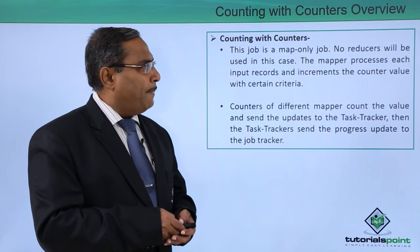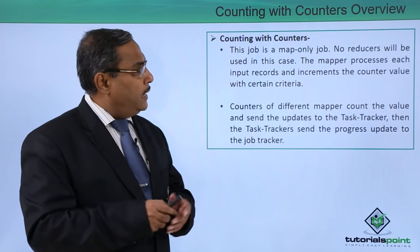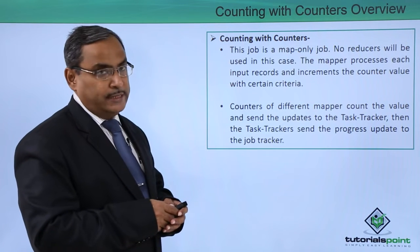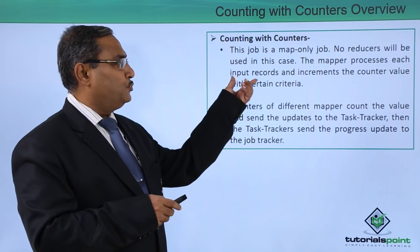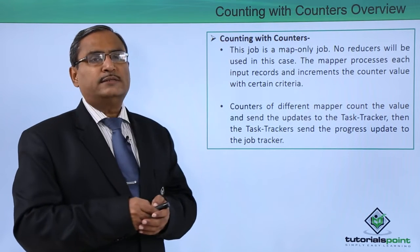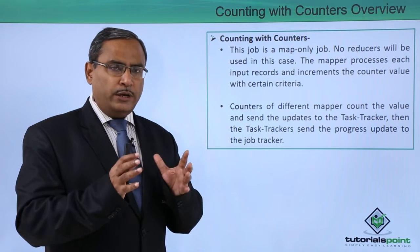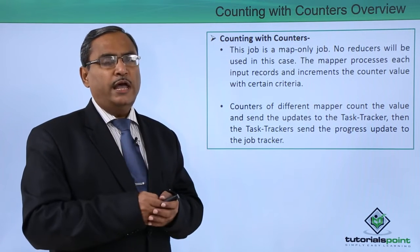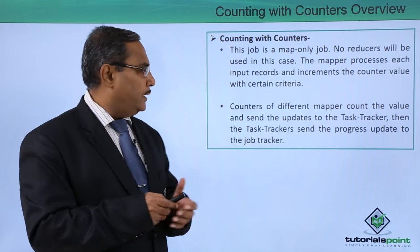This job is a map-only job — no reducer will be used. The mapper processes each input record and increments the counter value based on certain criteria. For similar key values, it will keep increasing the counters accordingly.